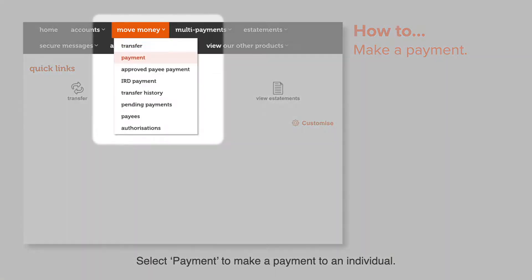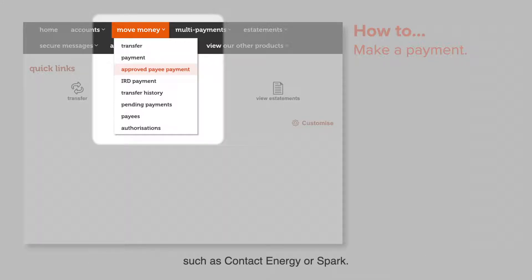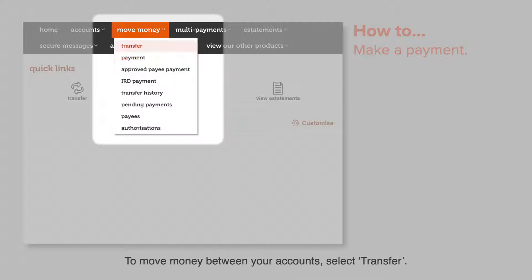Select Payment to make a payment to an individual. Select Approved Payee Payment to make a payment to an organisation such as Contact Energy or Spark. To move money between your accounts, select Transfer. To make a payment to the Inland Revenue, select IRD Payment.